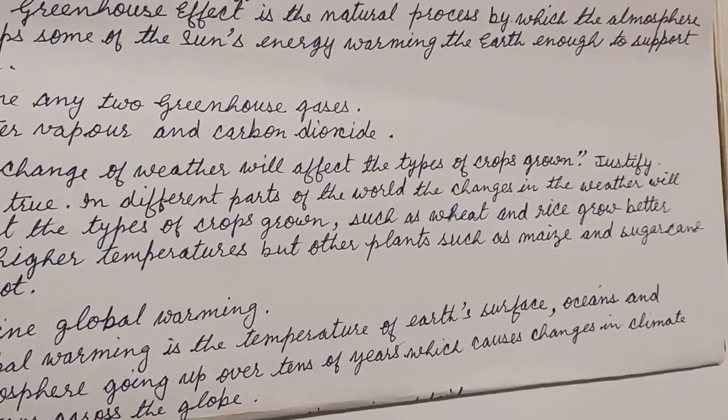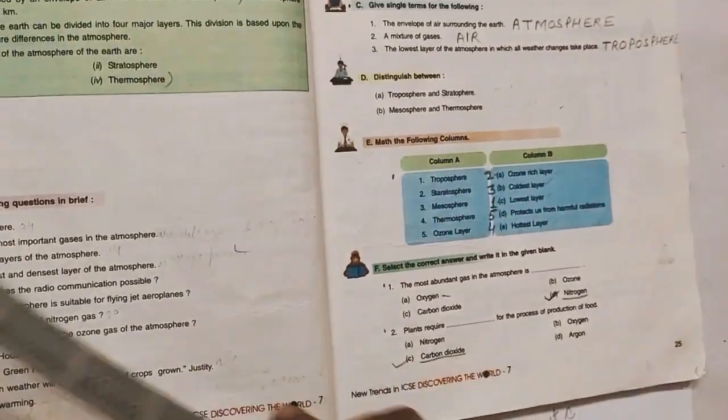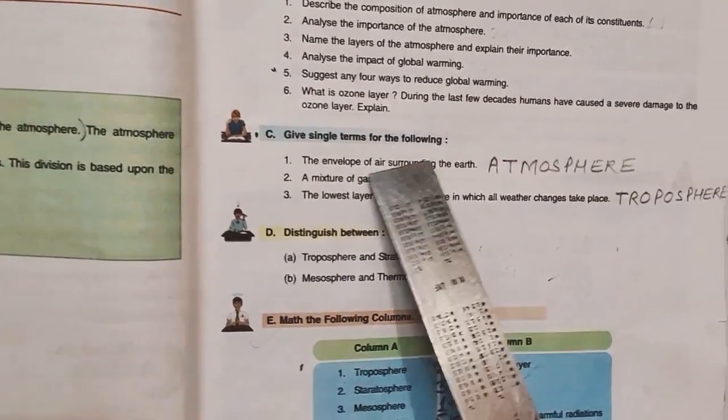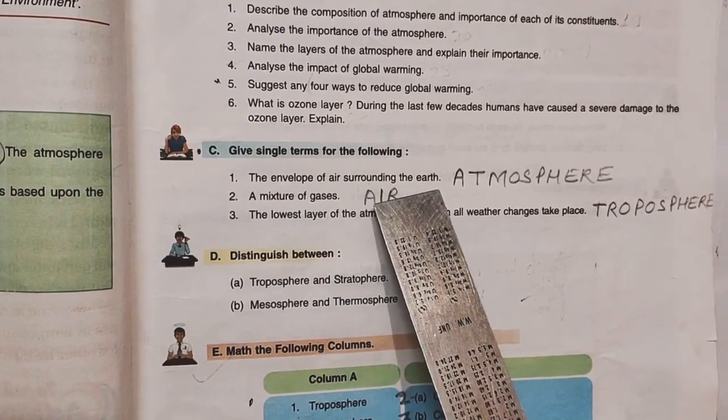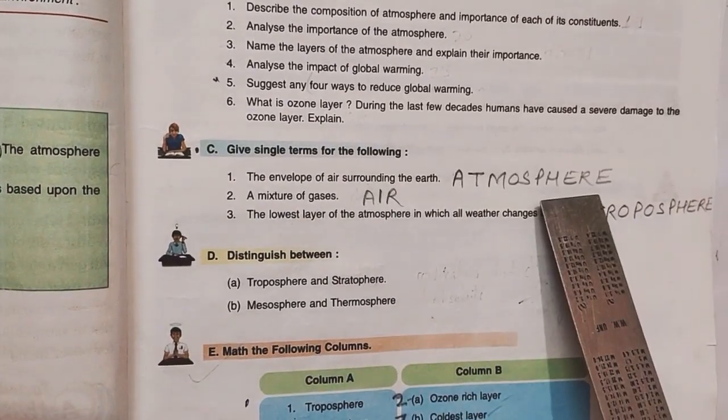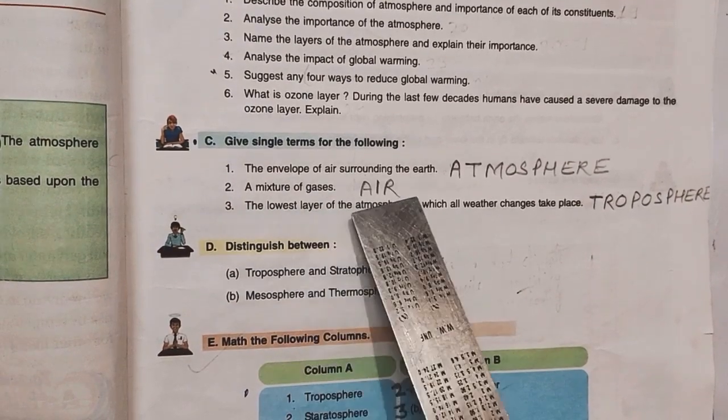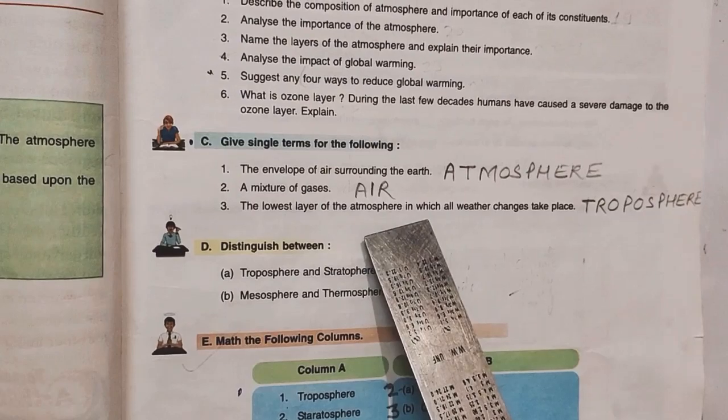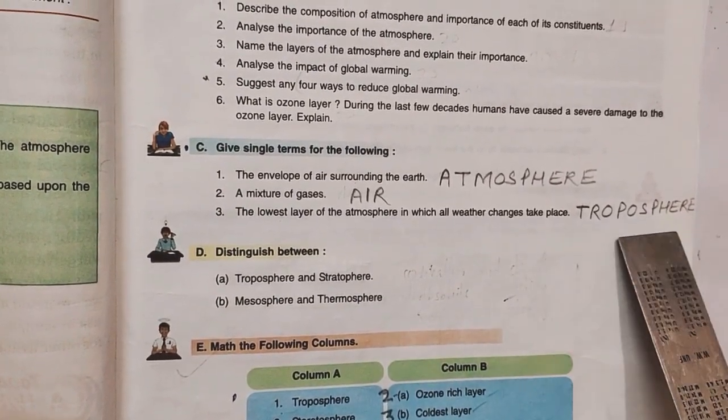Now, we will do set C. Give single terms for the following. Number 1. The envelope of air surrounding the earth. It is called Atmosphere. Number 2, a mixture of gases. It is called Air. The lowest layer of the atmosphere in which all weather changes take place. It is Troposphere.